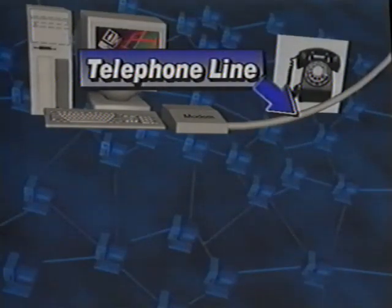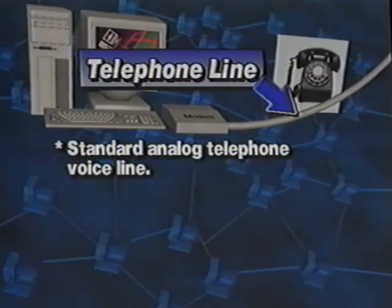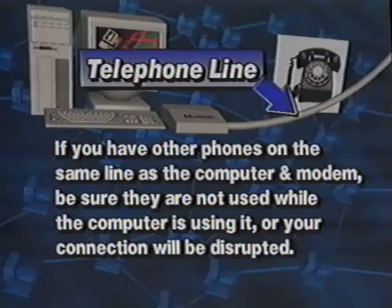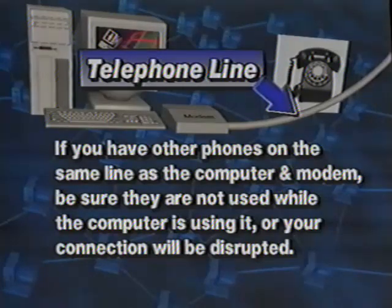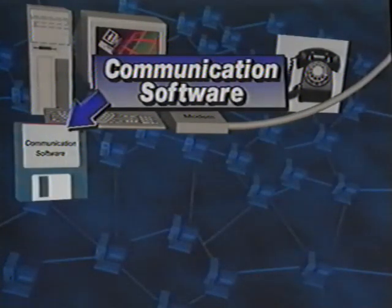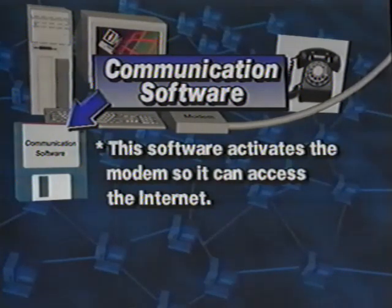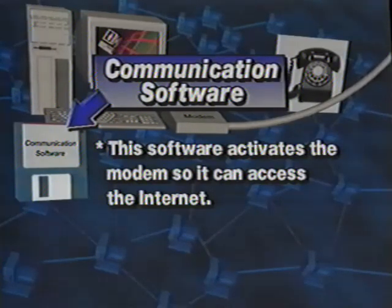Our next item is a telephone line — this gives us the communication path into an internet access point. Suzanne is using a standard analog telephone voice line. If you have telephone extensions in the house, make sure nobody picks up another receiver while the computer is using it, or your connection will be seriously disrupted. Communication software is the next requirement; this software activates the modem and is often supplied along with it. The Windows program has its own communication program and some internet service providers have their own communication software.